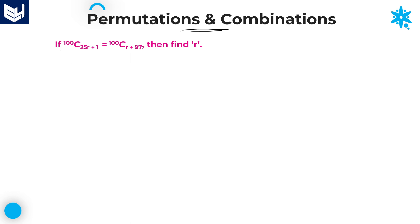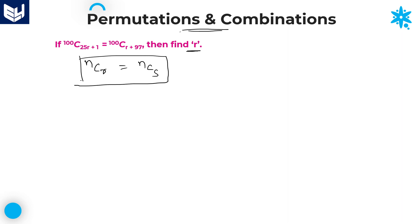Here the problem is given as: if 100C(25r+1) is equal to 100C(r+97), then find the value of r. If you observe carefully, this is in the form of nCr = nCs, because the particular n value is the same in both cases — on the right-hand side and left-hand side, the n value is equal.